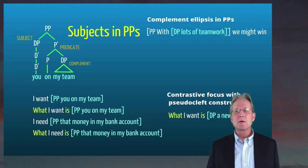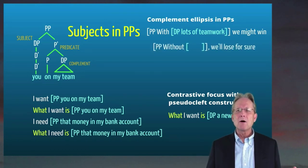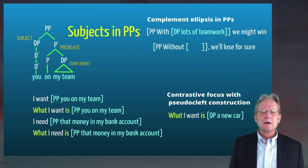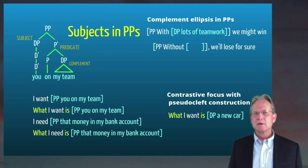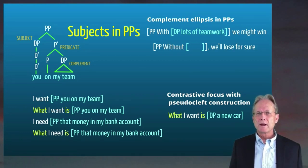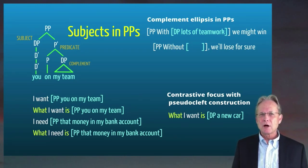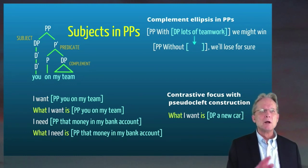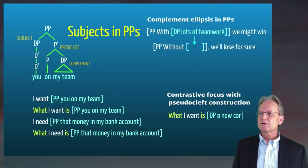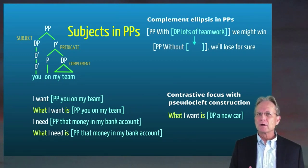And then at the same time, you can have things like this, with lots of teamwork, we might win. Without, we'll lose for sure. So here, what we've got is a case where with is a preposition that has a DP as its complement with lots of teamwork. And if we've already said that, we can create another prepositional phrase using without a little bit later, at which time we leave out the complement entirely. But if we do, we get the interpretation from the complement of with that has already come before. So phrasal constituents can undergo an ellipsis in this way.